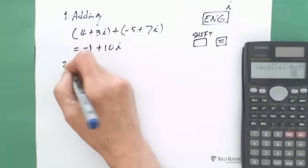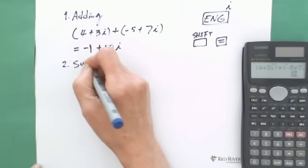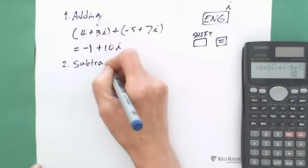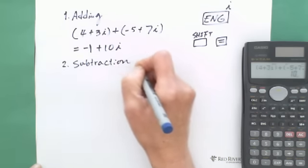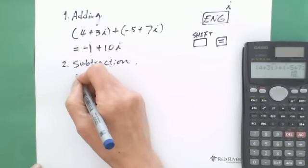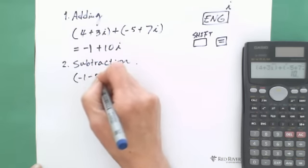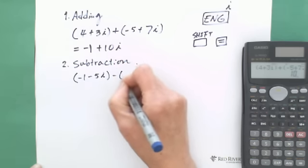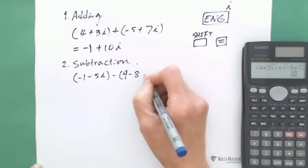Second, do subtraction. For example, the question is -1 minus 5i minus 9 minus 8i.